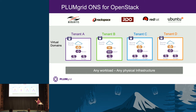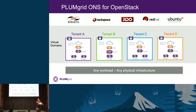PlumGrid ONS can deploy on top of any physical infrastructure, any hardware, any networking gear, and brings you isolated multi-tenant environments — what we call virtual domains. Inside a virtual domain you can define any networking functionality for an application and define a logical topology that, in software, will be realized on top of your physical infrastructure. We work tightly with all the major OpenStack distributions and are the most integrated SDN solution.